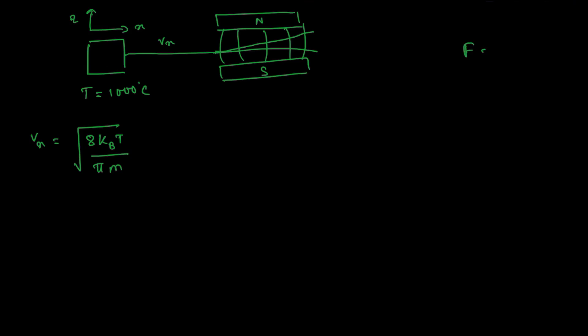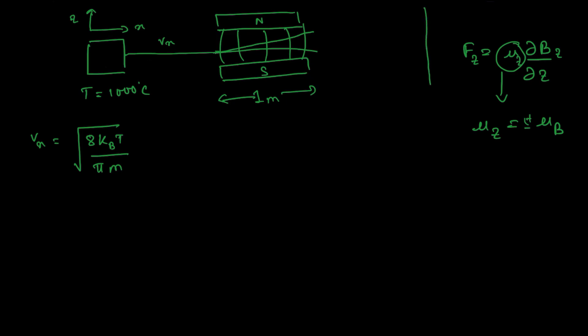We know that in a magnetic field, the force experienced is given by F = μ · dB/dz in the z direction. The magnetic moment is taken as the Bohr magneton, μ_B, which is a physical constant. When it has a positive value, the force on the atom is upward; when negative, the force is downward. So the atoms will split depending on the force acting on them. The magnet is one meter long, and further there is a screen one meter from the magnet where the atoms experience no force in the z direction and hit the screen. We have to find this separation distance, let's call it delta z.